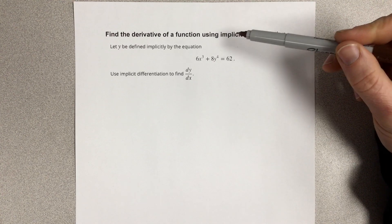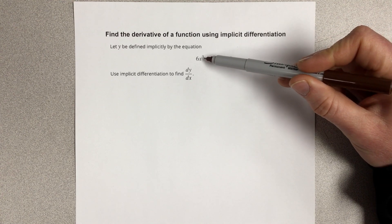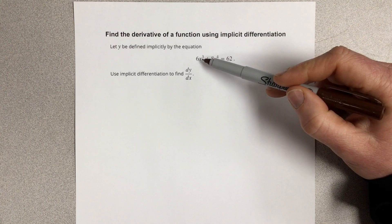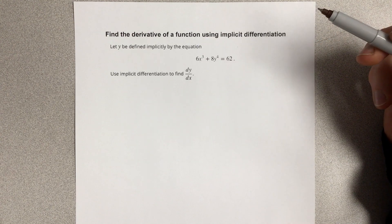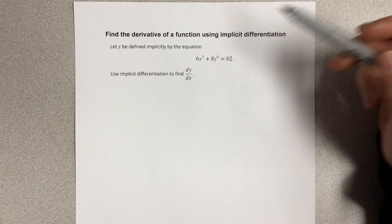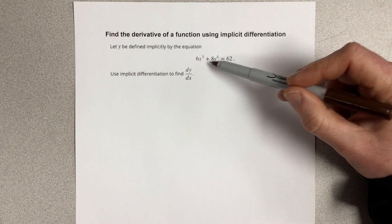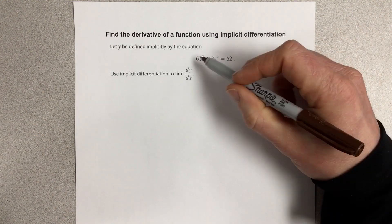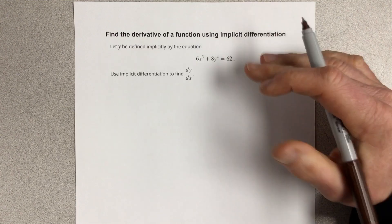We use implicit differentiation when we have an equation that is not y in terms of x. We have both x and y on the same side of the equation. There's not really a good way to isolate the y variable, so we can take the derivative implicitly, which means take the derivative of each part in pieces.